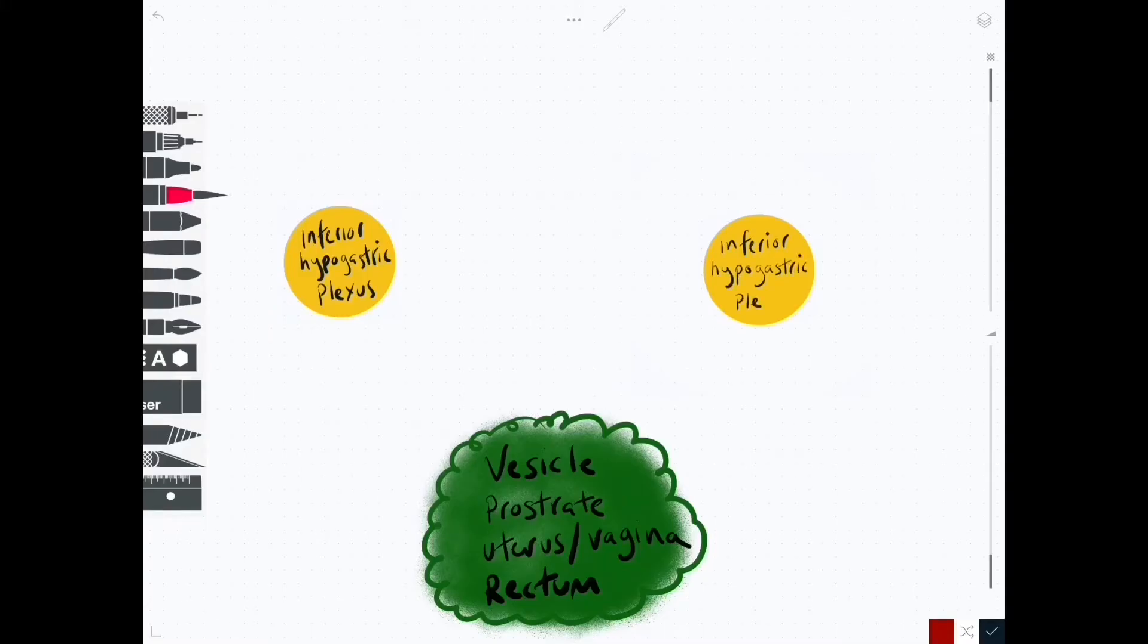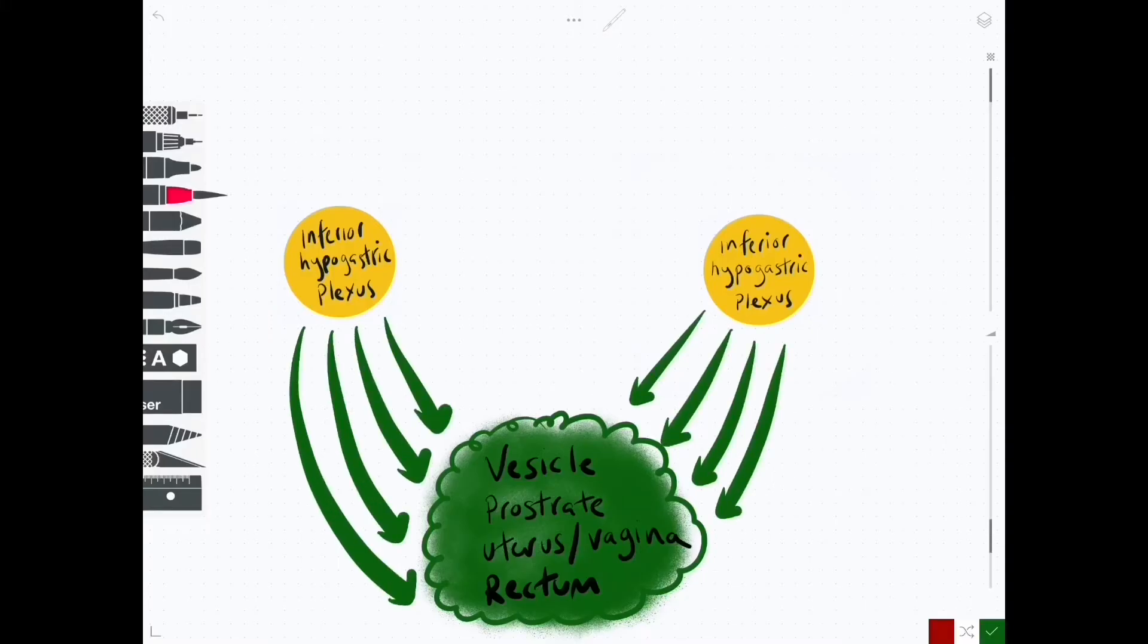Now we can see two yellow circles coming on screen and they represent the inferior hypogastric plexus, a larger plexus inside the pelvic cavity that feeds into those subsidiary plexuses. In reality they tend to be a single plexus but we've drawn them here as two separate ones, the left and the right.